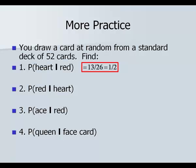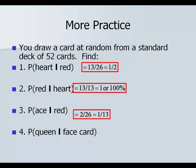Number two: the probability of being red given that it was a heart. The probability of being red and a heart is 13 cards out of the deck, and the probability of being just a heart is 13. So 13 over 13 is 1, or 100 percent chance. Number three: the probability of being an ace given that it was red. The probability of being a red ace is 2 cards out of the probability of being red, which is 26 cards. Two out of 26 is 1 out of 13.